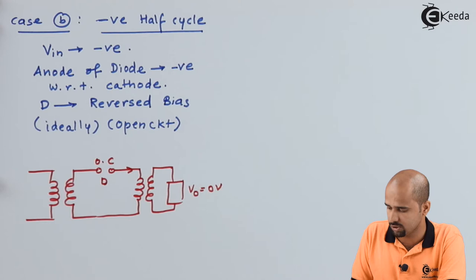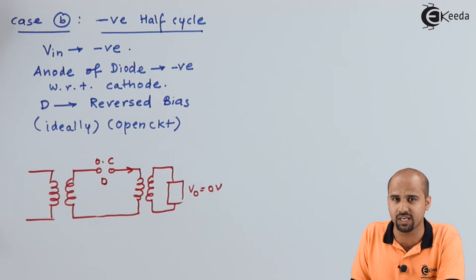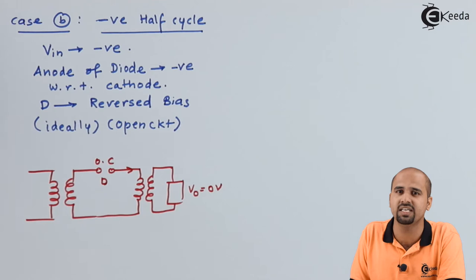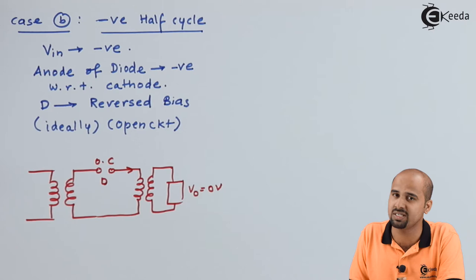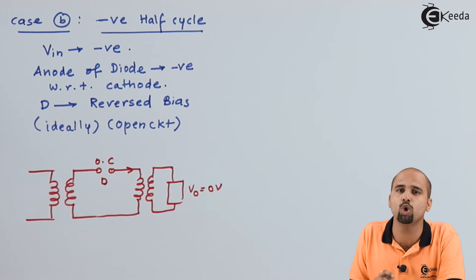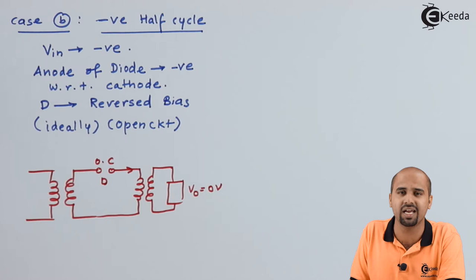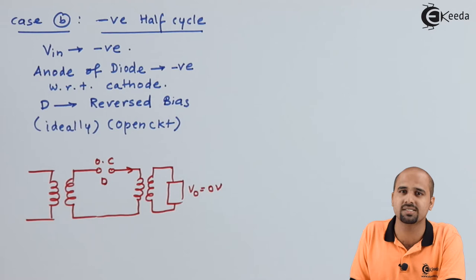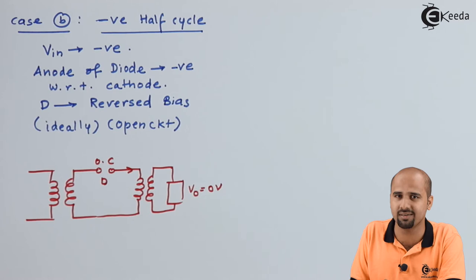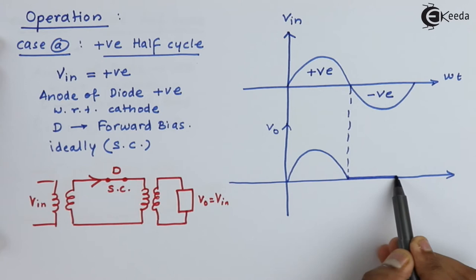For the complete negative half cycle, even though the input signal is changing towards the negative side, the output voltage is zero. So in the negative half cycle we achieve zero output, meaning DC output. The motto of rectification is to convert an AC signal into a DC signal, but it is not possible to convert AC into a pure DC signal. That is why this rectification fails to produce pure DC — rather, it converts AC to pulsating DC. So Vo equals zero volts for Case B and Vo equals Vin for Case A.